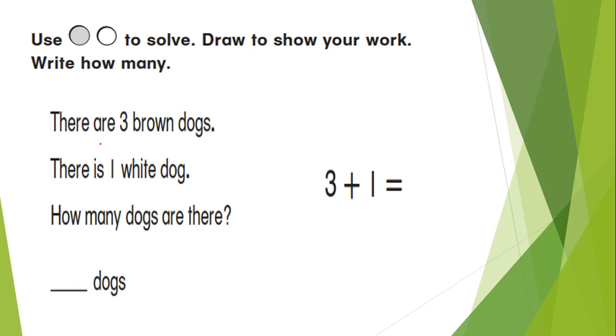Let's read the first one. It tells you that there are three brown dogs and one white dog. How many dogs are there? So here we need to find the total number of dogs. We have three brown and one white.